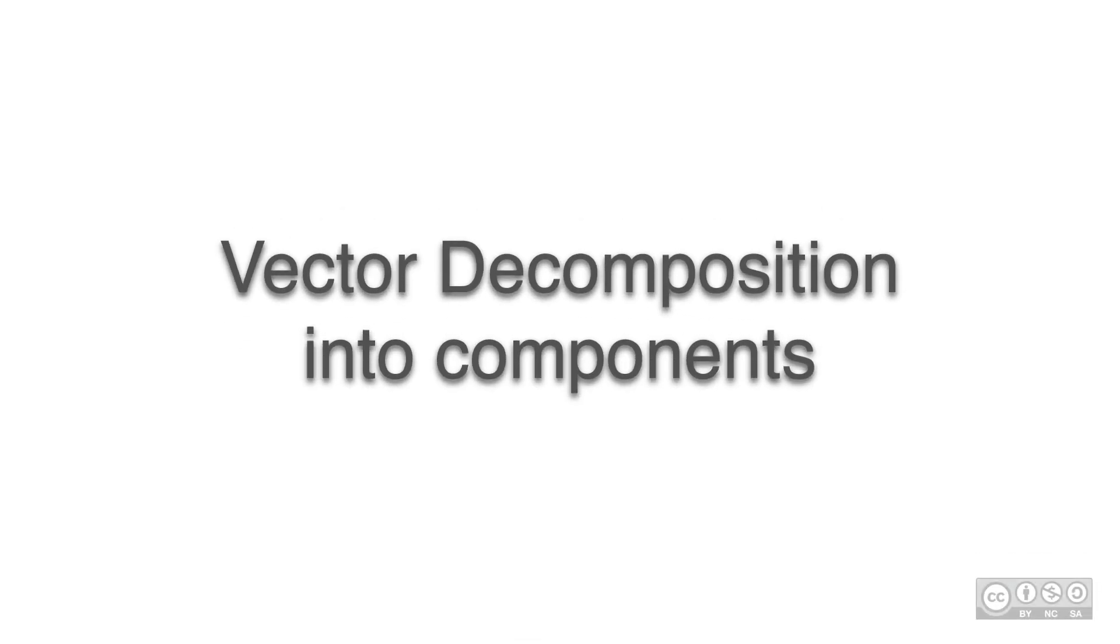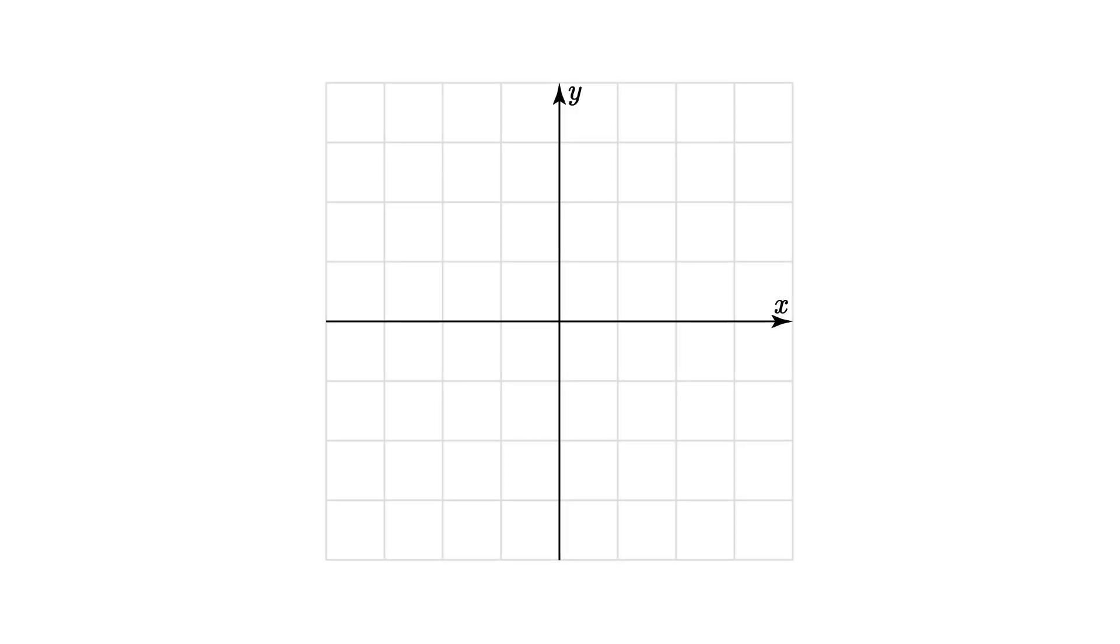Vectors can be represented through their components. If we have a vector a, we can decompose it into its components in the x and y directions by finding the vectors along x and along y that add up to the vector a.